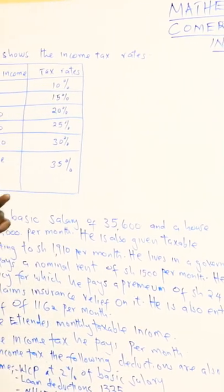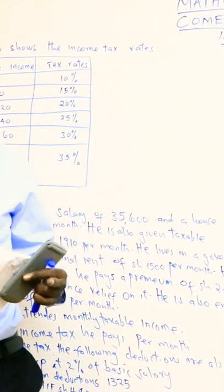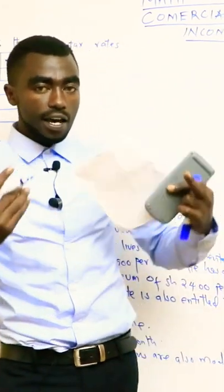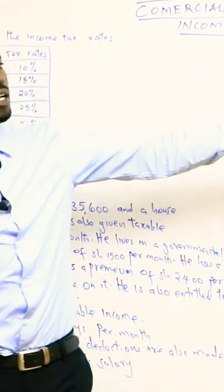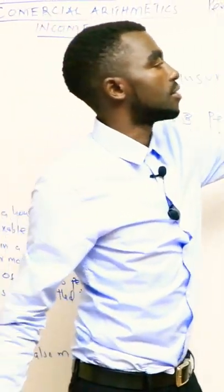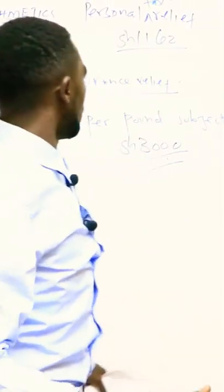Because the taxable income is the salary of the individual, you add all the allowances. But if the house is also provided by the government, then we have to less what you call the nominal rent. So we have an example.